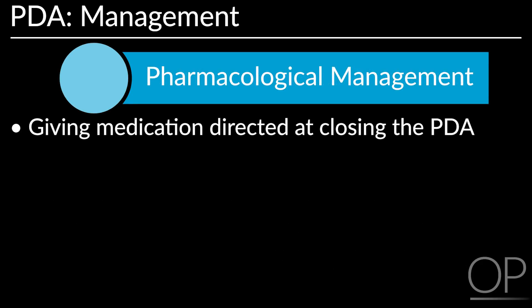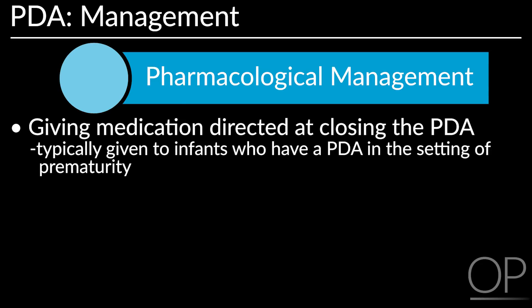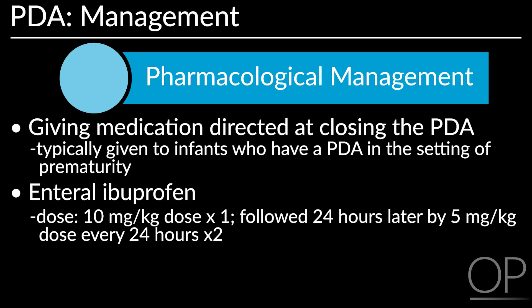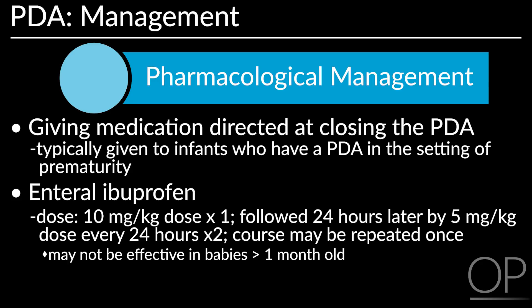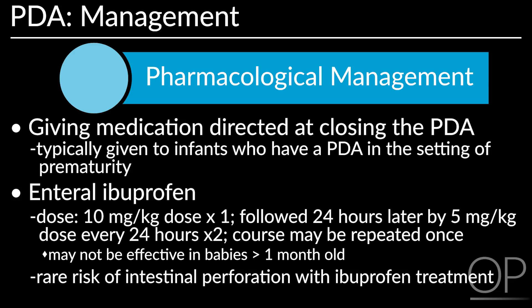Pharmacological management of PDA involves giving a medication directed at closing the PDA, typically given to infants who have a PDA in the setting of prematurity. One pharmacological option is enteral ibuprofen. The first dose should be 10 mg per kg, followed by a dose of 5 mg per kg 24 hours later, then another 5 mg per kg dose 24 hours after the second, for a total of 3 doses. If the ductus remains open, the course can be repeated once. This approach is less likely to be effective in babies older than one month.